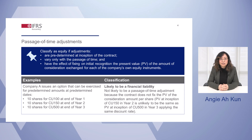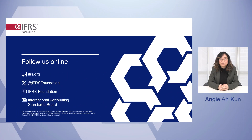The example illustrated on the slide is of an option that can be exercised for predetermined amounts at predetermined dates. However, the adjustment to the exercise price is not likely to meet the passage of time adjustment described in the ED because the contract does not fix the present value at initial recognition of the consideration amount per share. The present value at inception of 150 currency units in year 2 is unlikely to be the same as the present value at inception of 500 currency units in year 3 applying the same discount rate. Please submit your comment letters on our website before the 29th of March 2024. We look forward to hearing your views.